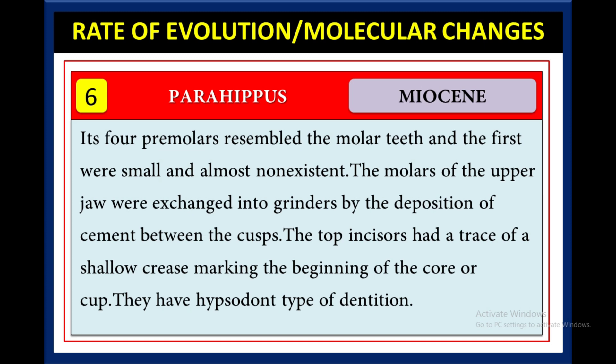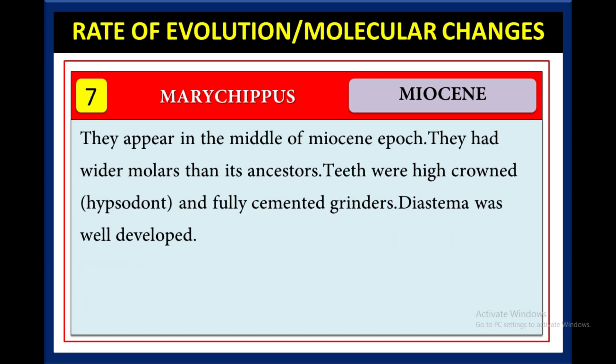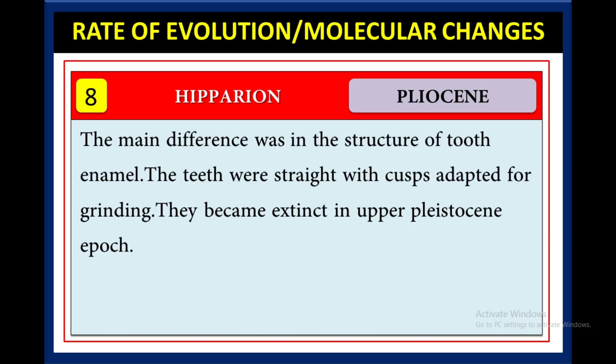In the middle of the Miocene epoch, Merychippus appeared. They had wider molars than their ancestors. Teeth were high-crowned — hypsodont — and fully cemented grinders. The diastema was well developed in this species.